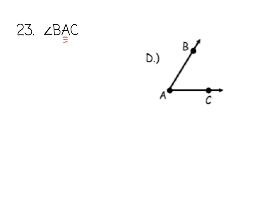Angle BAC, this tells me that the vertex must be A, which it is here, and B and C are just points on the other rays.